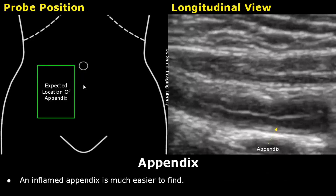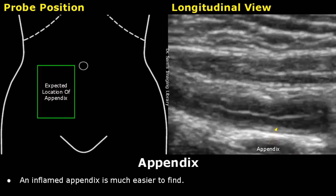This is the expected location of the appendix, but it has a variable location in different patients, so there is no fixed location. The probe position and location of the appendix shown in this video is for the location most commonly found, and it showed a normal appendix. An inflamed appendix is much easier to locate and scan. Thank you for watching — please subscribe and stay tuned for more imaging videos.